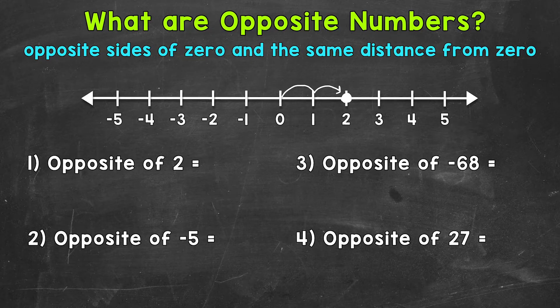Now we need the opposite. So we need to go to the left of zero, that same distance of two. So one, two, and we end up at negative two. So the opposite of positive two is negative two.